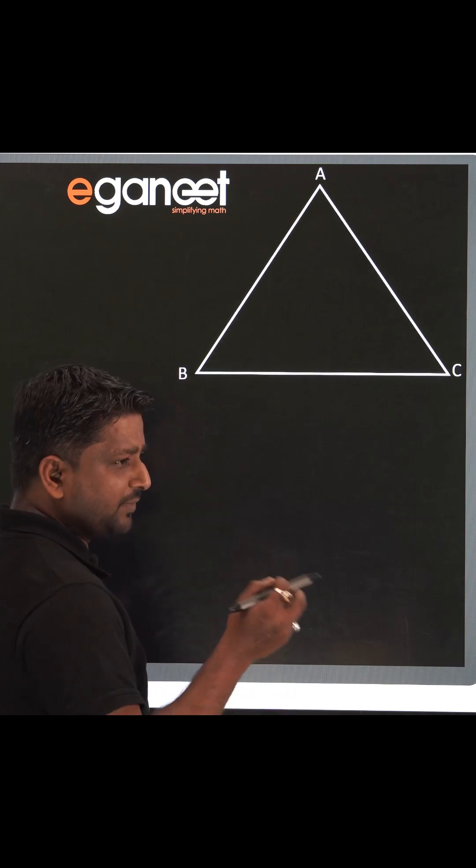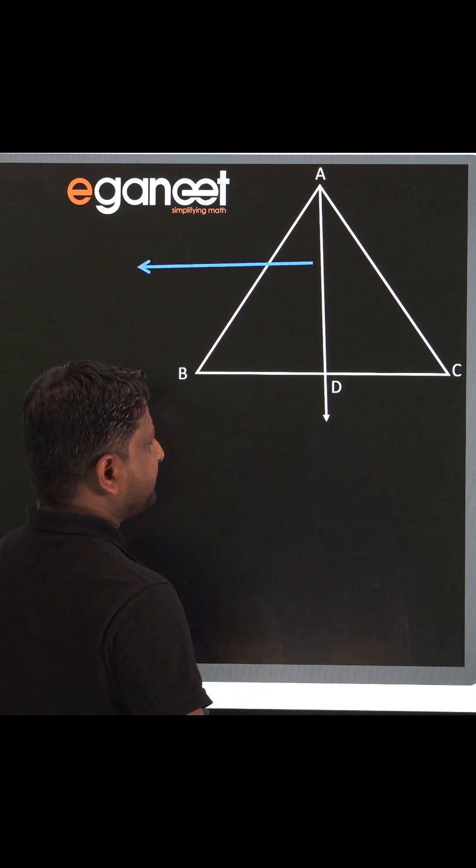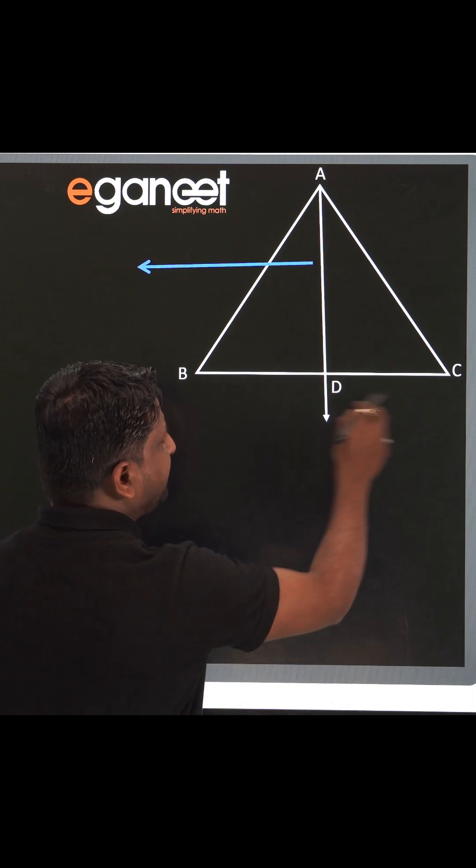So here is the triangle ABC and now we are going to find out its center, right? So this AD is median. In that case, D will definitely be the midpoint of BC.